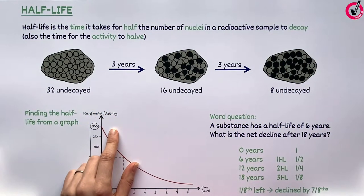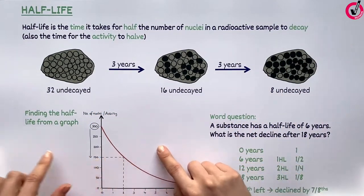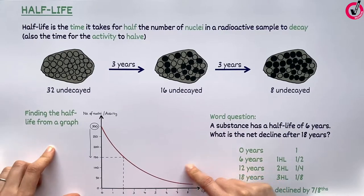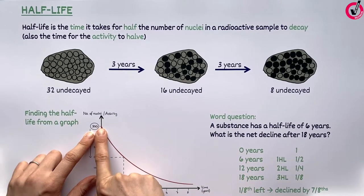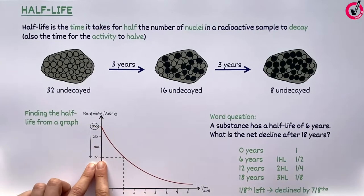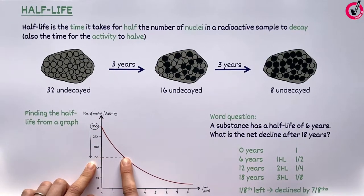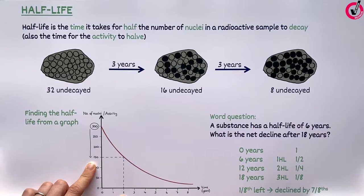In an exam, you might be asked to find the half-life from a graph. You look at what number you're starting at — in this case 300 — and go down by half. Draw a dotted line across to the curve and down to the x-axis and read the time. In this case, the half-life is two years.